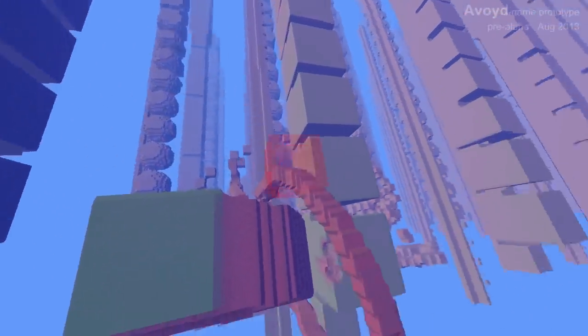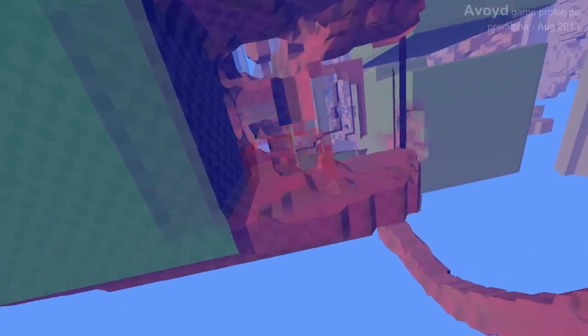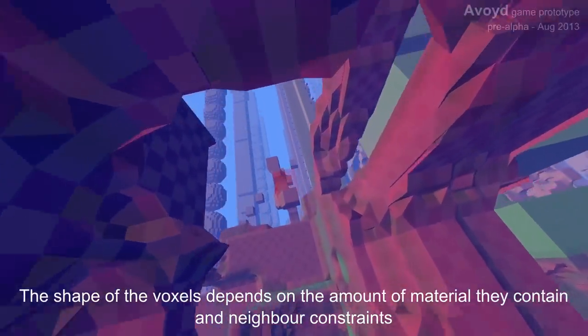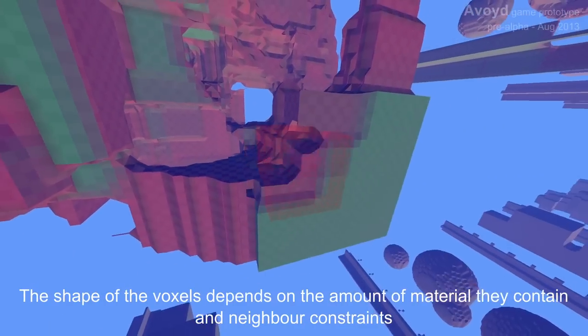Now you've noticed that the voxels aren't displayed in polygons. It's just plain, simple cubes. They have slightly different shapes depending upon, in this case, how much material is in them, and also what the constraints are from the neighbors.